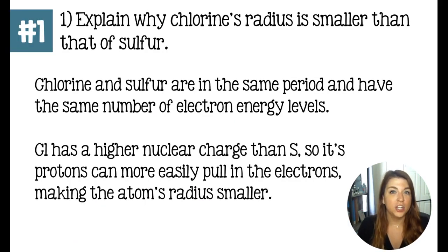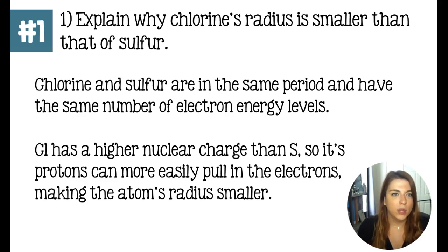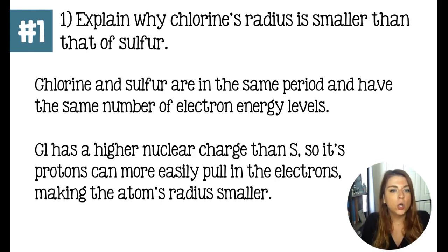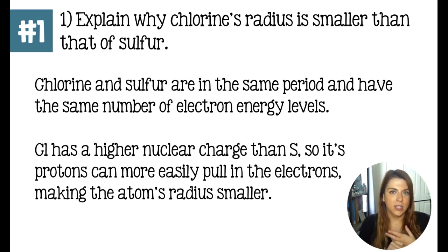Using the concepts of nuclear charge and shielding, you should be able to compare any two elements in terms of a periodic table trend and thoroughly explain it — not just know that one is bigger than the other. For example: why is chlorine's radius smaller than sulfur's? They are in the same period with the same number of electron energy levels — three energy levels — but chlorine has a higher nuclear charge than sulfur, so it pulls electrons in more tightly, giving chlorine a smaller radius, higher electronegativity, and higher ionization energy.